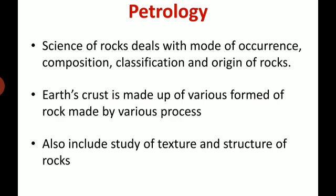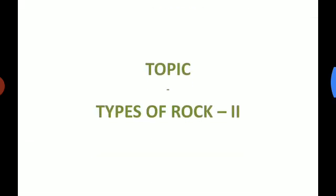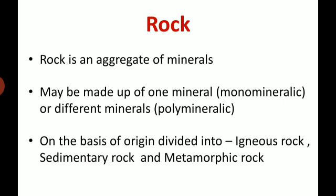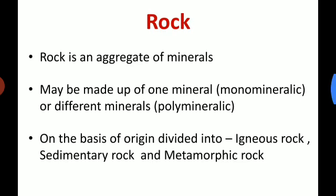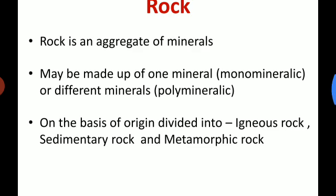We move to our main topic: Types of Rock, second session. Rock is a naturally occurring solid mass or aggregate of minerals. It is categorized by the minerals including its chemical composition and the way in which it is formed. Rock is either made up of one mineral, called monomineralic, or different minerals, called polymineralic. On the basis of origin, it is divided into igneous rock, sedimentary rock, and metamorphic rock.